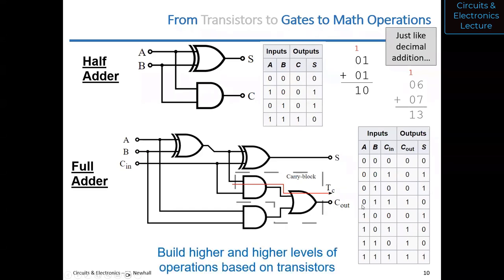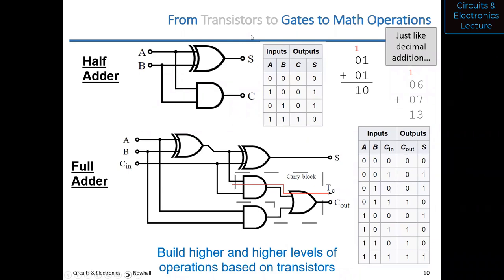So what we've shown across these slides is that you can take transistors and create gates, then take gates and create functions that add binary numbers together. A circuit like this exists inside a microcontroller so it can add 32-bit numbers together and give you a result.